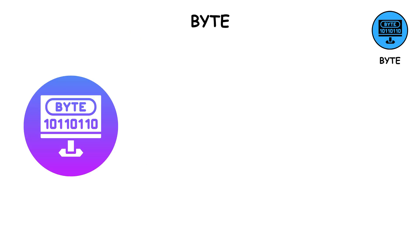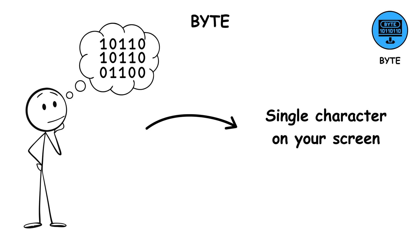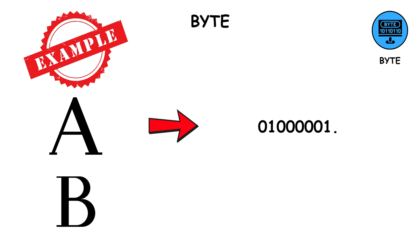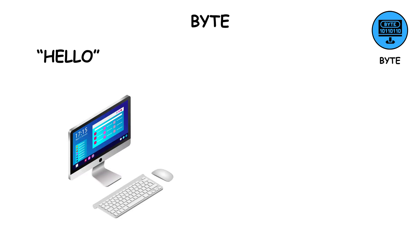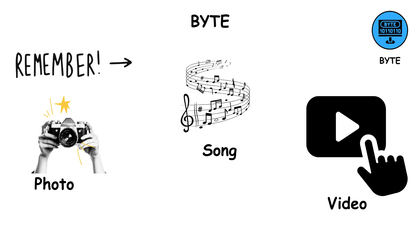A byte is made up of eight bits. Think of it as a small bundle of bits grouped together to represent something meaningful, like a single character on your screen. For example, the letter A is represented in binary as 01000001 — that's exactly one byte. The letter B is represented as 01000010. So if you type the word 'hello,' your computer is actually processing five bytes, one for each letter. That might not seem like much, but remember, a typical photo, a song, or a video has millions of these bytes.